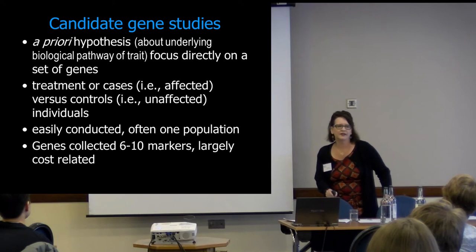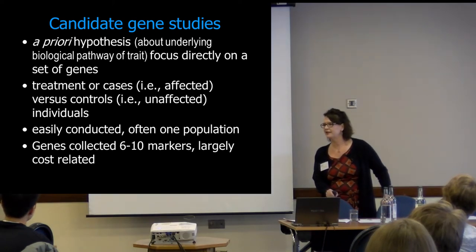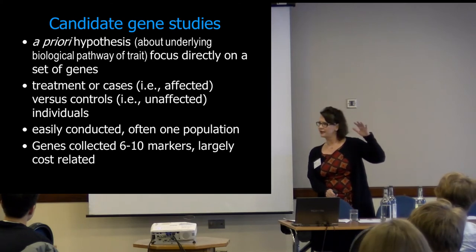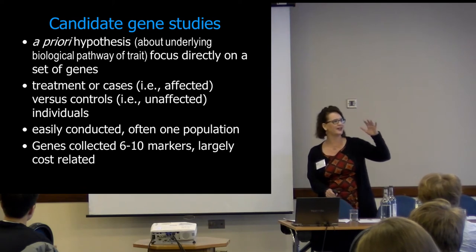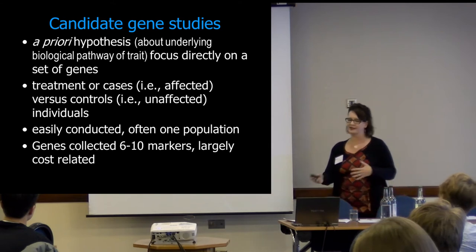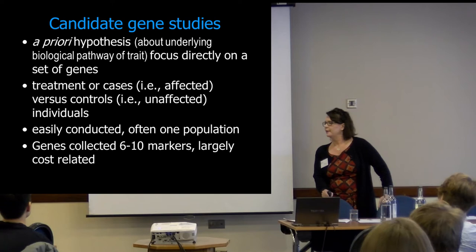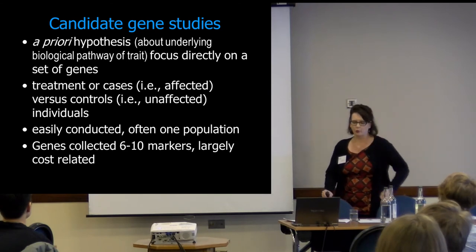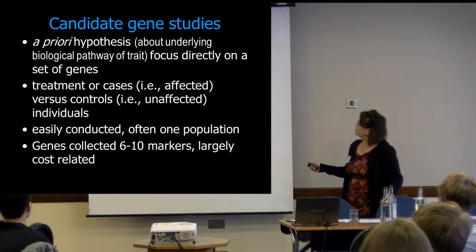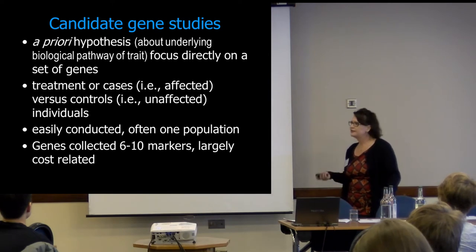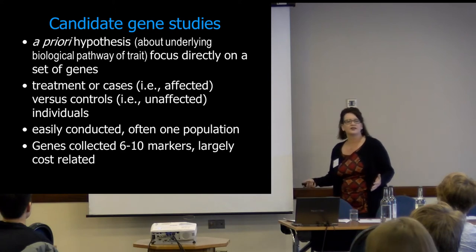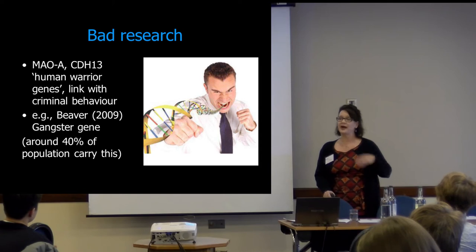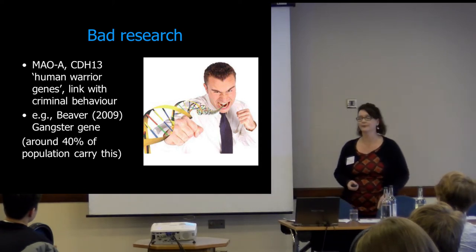There were a lot of studies in the 90s and 2000s based on candidate gene studies. These were published in major journals in psychology, but also the American Journal of Sociology, Population Studies, and other major social science journals. They were often hypotheses based largely on animal models about dopamine, serotonin, and reward functions. They compared people with certain genes against those without, focusing on certain genetic loci. Many studies collected only about six or ten markers, and this produced a lot of bad research.